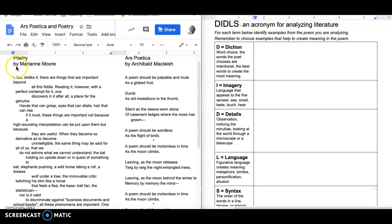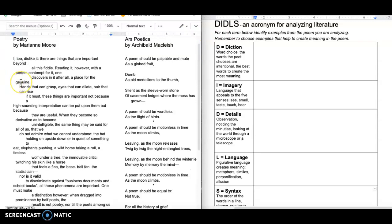So now let's look at Poetry by Marianne Moore and apply our DIDLS acronym for analyzing literature, to try to better understand it. And one of the techniques that I like to use when analyzing poetry is